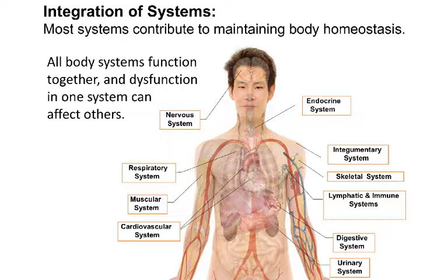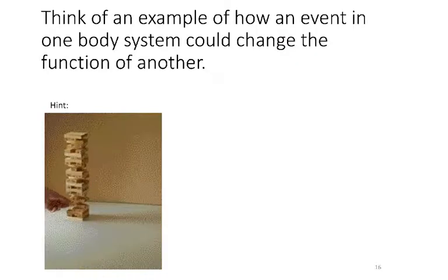I'd like you to think about, just with what you know — don't look anything up, just brainstorm by yourself or with someone else — how any particular system might influence another. This is like Jenga: you take too many pieces out from any place and the tower is going to topple over.